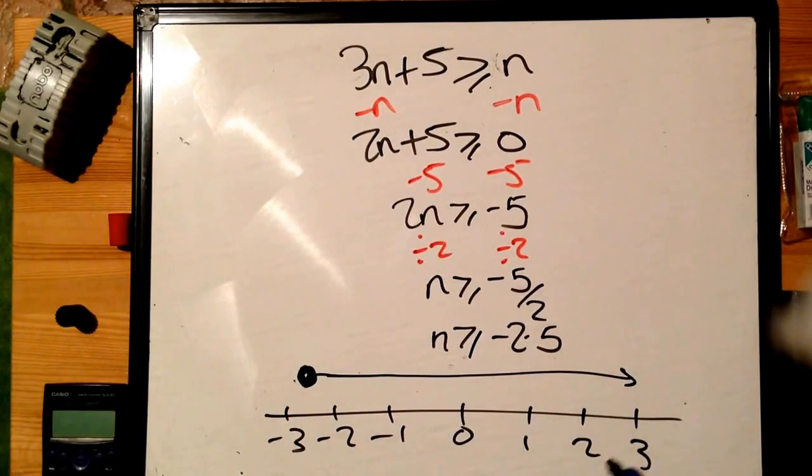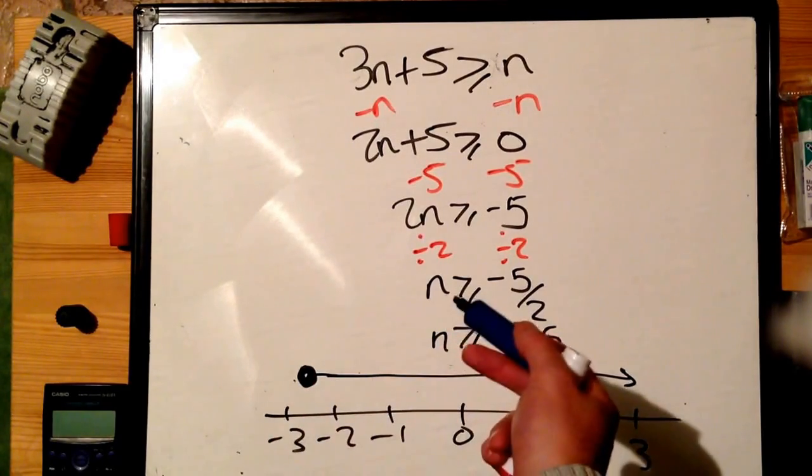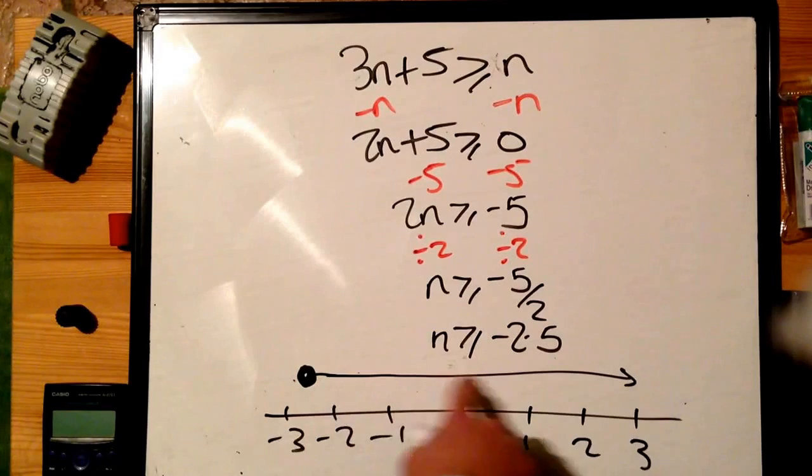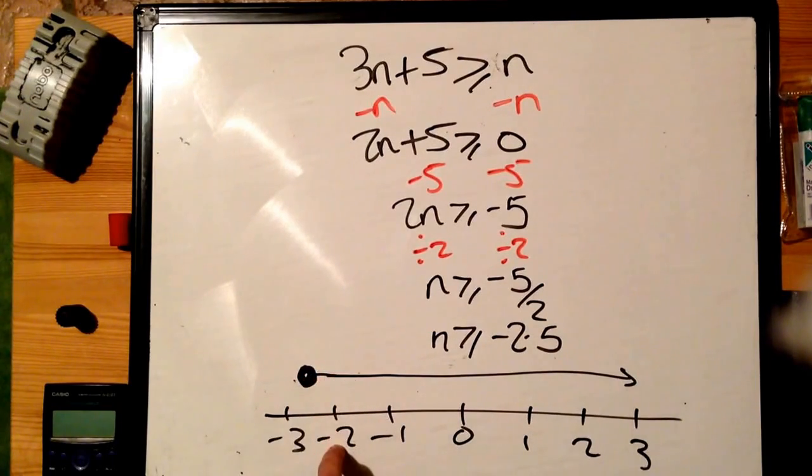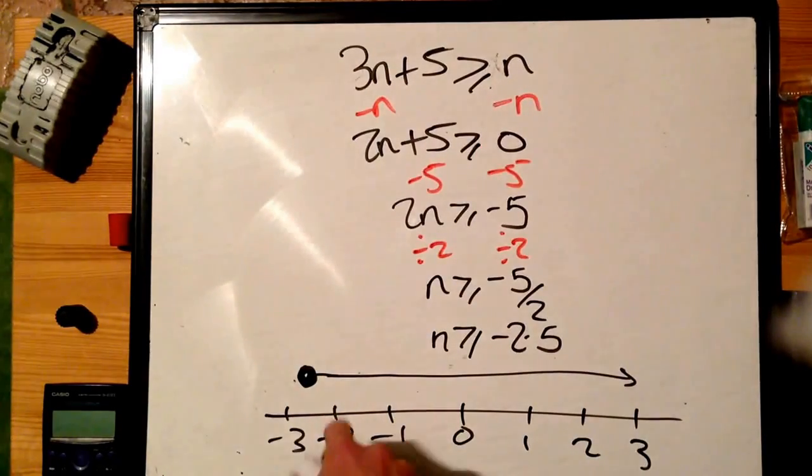Our smallest integer value - first, you've got to remember what integer means. Integer is a whole number. So we start here and follow our line until we get to the first whole number. There it is: minus 2. So our smallest integer value that satisfies the inequality is minus 2.